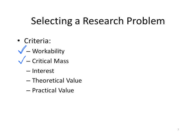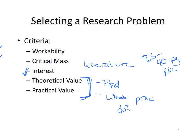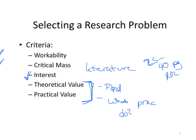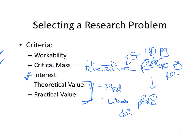The second part: critical mass. Critical mass has to deal with the literature. Do you have enough literature to write? Your goal here, by the end of this semester, will be to write approximately a 25 to 40-page review of literature. If there isn't enough literature to help you develop a good 25 to 40-page ROL, you're not going to have enough information to develop a good research question — which is really the goal of the review of literature. So critical mass is: do you have enough information to even develop the question that you need?